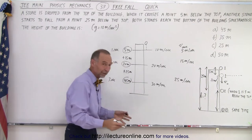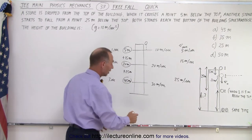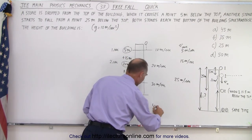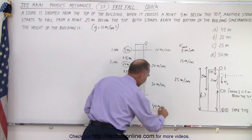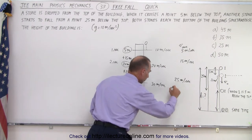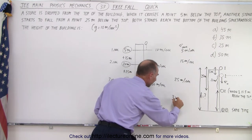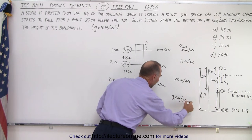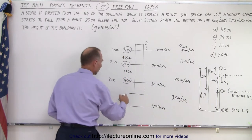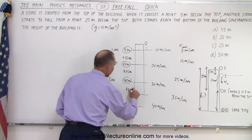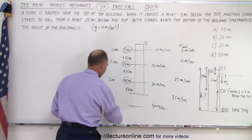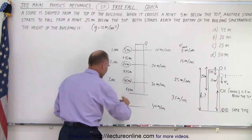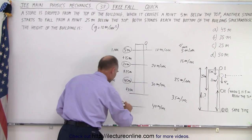And of course this continues — if the building is very tall, after another second it would be moving at 40 meters per second. The average velocity would be 35 meters per second, so it would drop another 35 meters, and at the end of the fourth second it would now be 80 meters down.